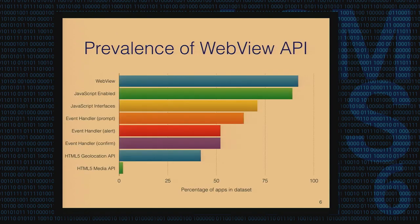Let's see how prevalent WebView and its APIs are in current applications on Google Play Store to really understand the extent of this problem. We have a dataset of about 1,400 applications selected from 21 categories in Google Play — these are the top apps in their respective categories. If you look at the first top bar, you can see that WebView is used by about 90% of the apps in our dataset.